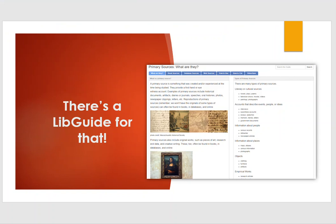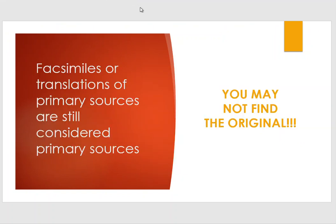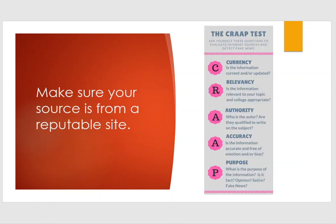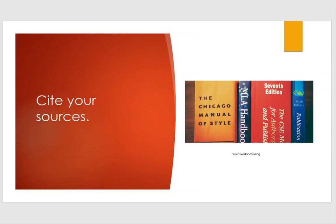The library has a long list of physical and electronic primary sources. Check out the primary sources LibGuide found on the library's homepage and it will walk you through how to find them. A couple of things to remember: one, a picture, facsimile, or translation still counts as a primary source — sometimes the original isn't available. Two, make sure your source is from a reputable site — evaluate your source. And three, don't forget to cite your source. There is a tab on the primary sources LibGuide that will walk you through how to cite these sources.